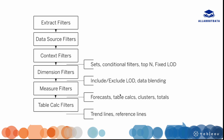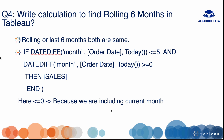Our next question is: write a calculation to find the rolling six months in Tableau. Rolling six months and last six months are the same thing. We calculate the date difference between order date and today's date based on months. If the date difference is less than or equal to 5 and greater than or equal to 0, it gives us sales. We use less than or equal to 0 to include the current month. If we don't want to include the current month, remove the equal sign and adjust the value to get the last six months.